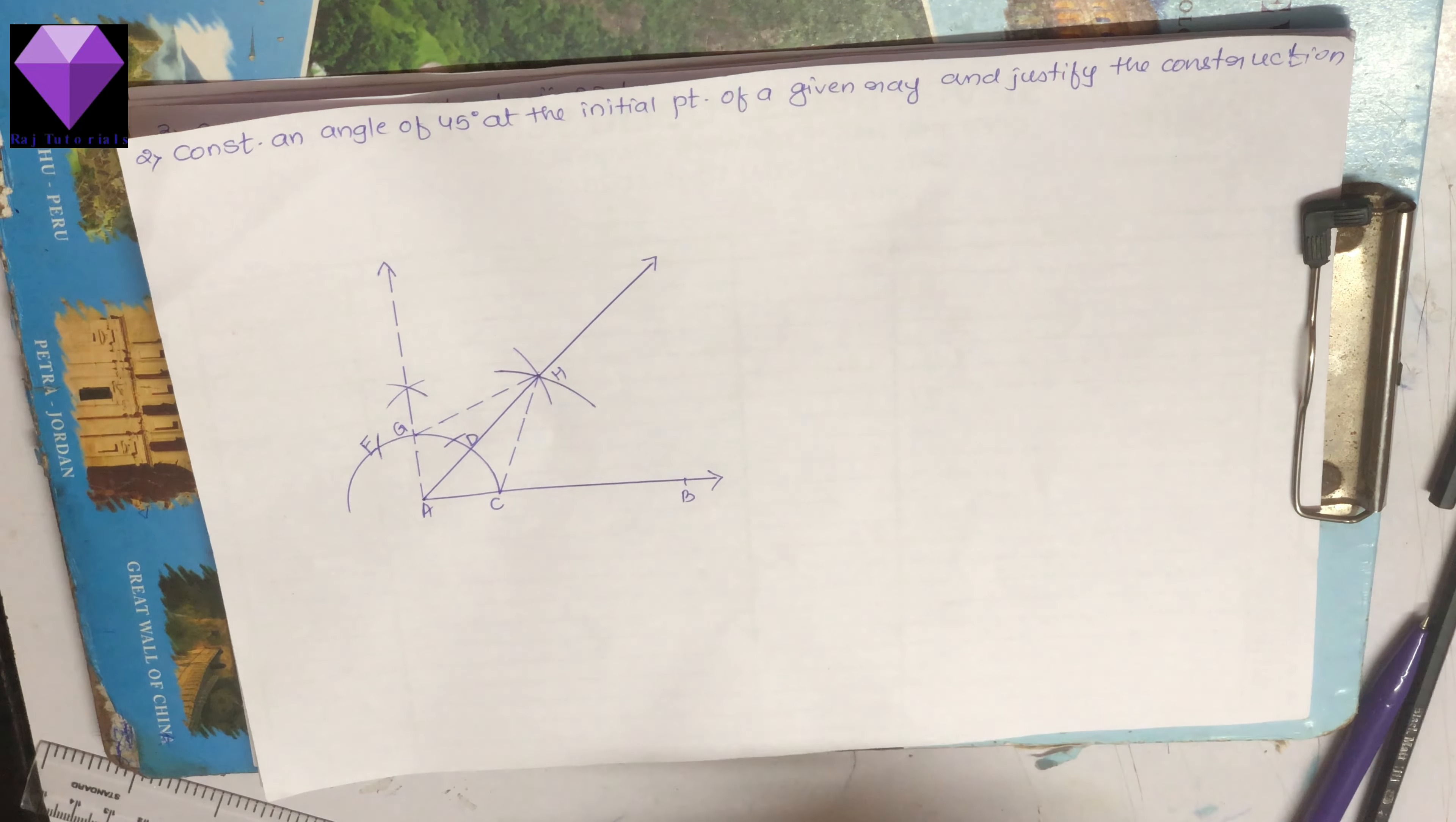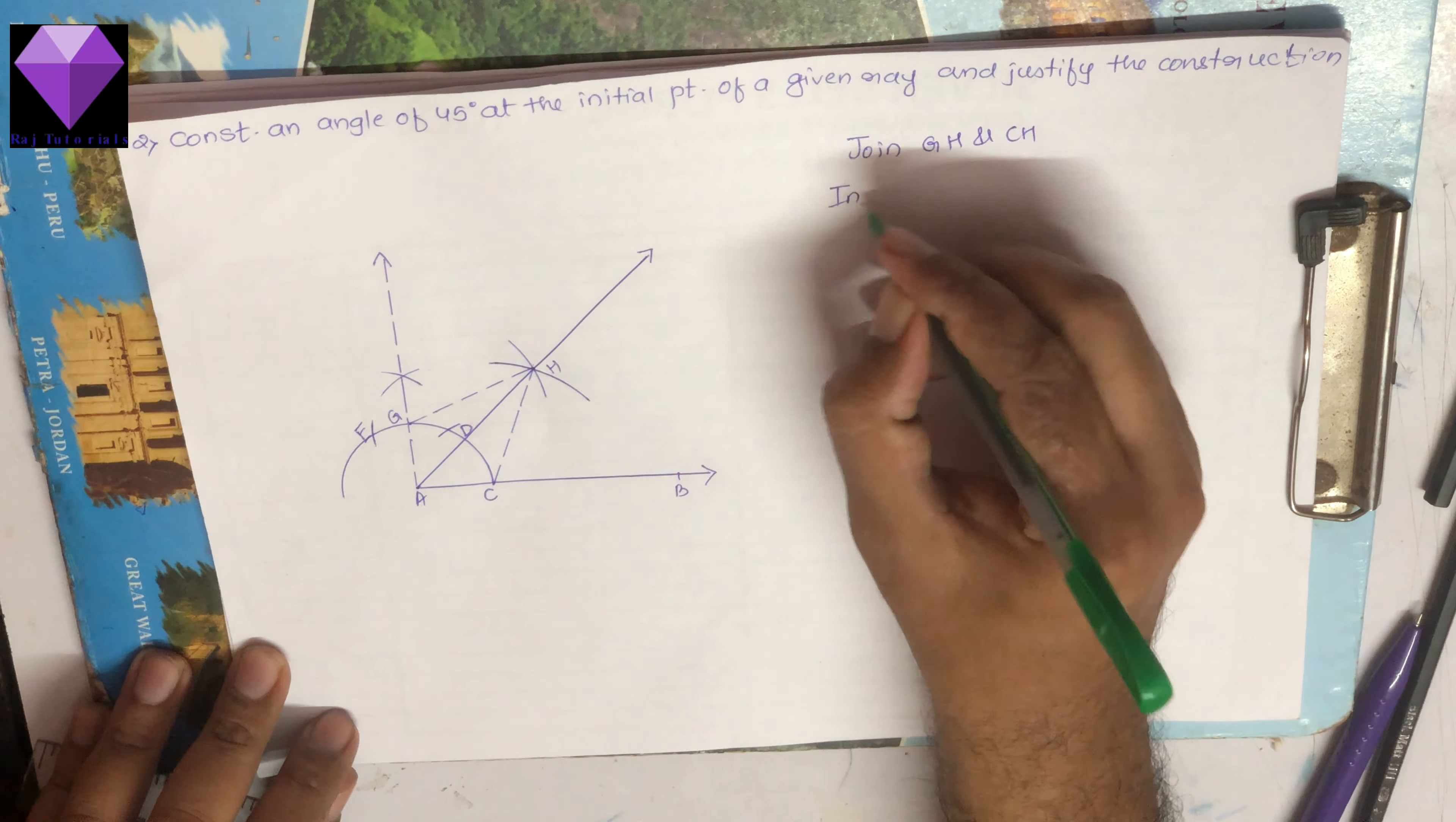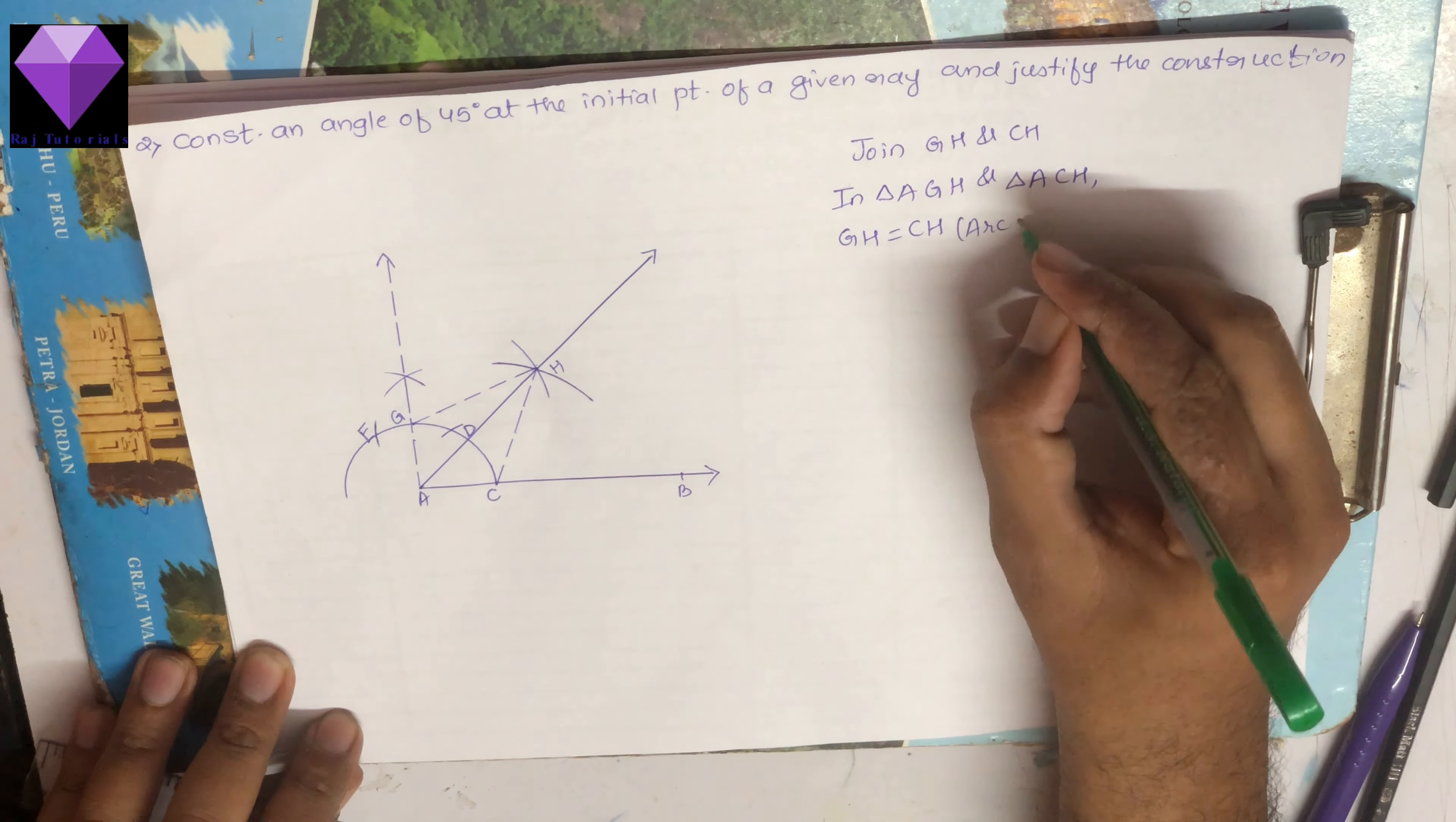Now to justify, first join GH and CH in triangle AGH and triangle ACH. GH equals CH, arcs of same radii.